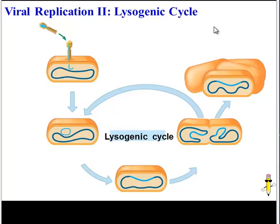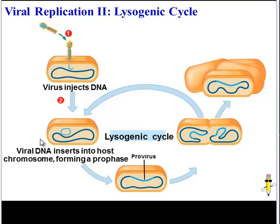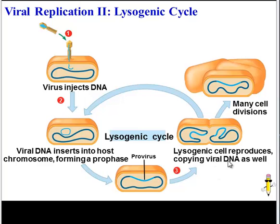The second type of replication is a little more insidious. This is called the lysogenic cycle. It starts off the same — the virus attaches to the host cell and injects its DNA. But here things are different. Instead of taking over the cell, the viral DNA inserts itself into the host cell's chromosome. This is called a prophage or a provirus, and it may just sit here for a while, not doing much, hiding inside the host cell. Every time that host cell reproduces, that viral DNA reproduces as well. After some time, many cells in an organism may have this viral DNA. And at any point, depending on environmental triggers, these cells could enter the lytic cycle and start to cause damage.